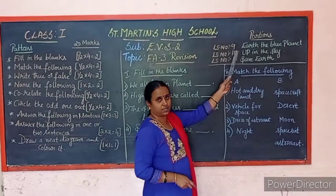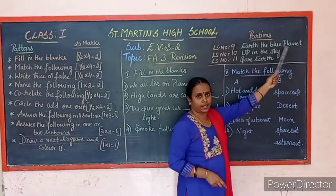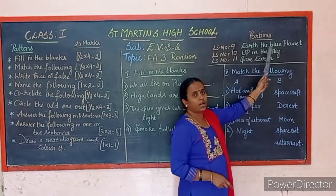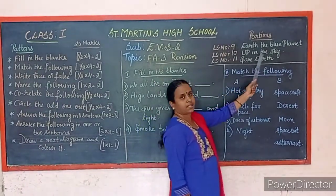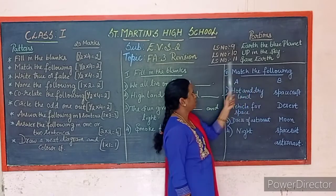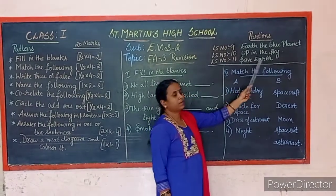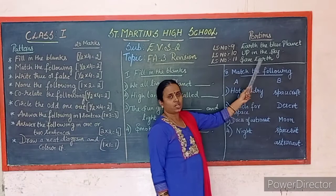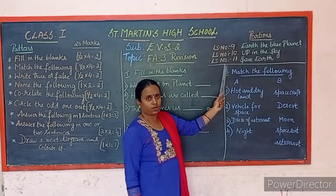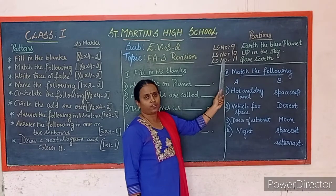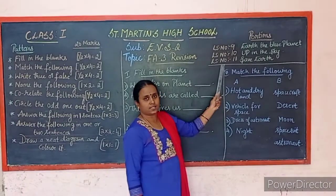Lesson number 9: Earth, the Blue Planet. Lesson number 10: Up in the Sky. And lesson number 11: Save Earth. So you have 3 lessons for your FA3. You have to get ready by preparing for these 3 lessons, children.